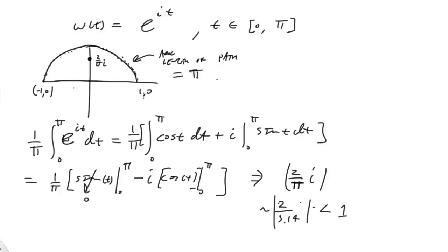So here's an example of why there's no such thing as a mean value theorem for complex integrals. When we sample e^(it) over this path, the integrated result is not a point that was on the path — it's (2/π)i, which lies inside the arc. That's an example of how the mean value theorem doesn't carry over to integrals in the complex plane. We'll learn more about integration in the complex plane in the coming videos. Thank you very much.